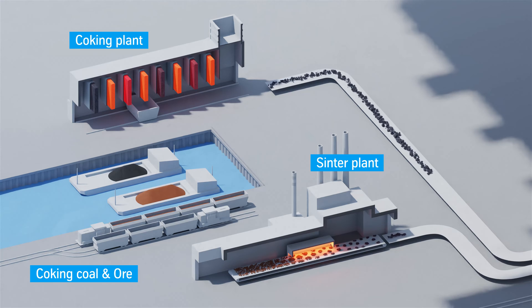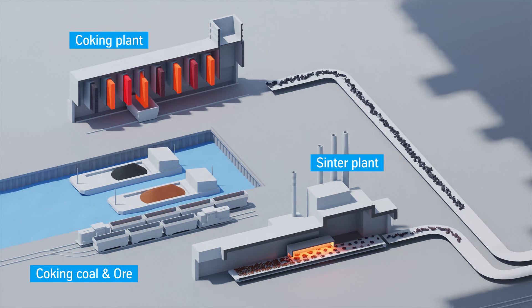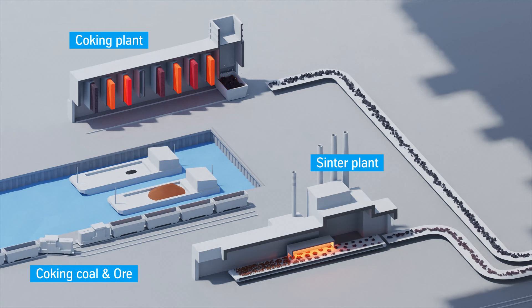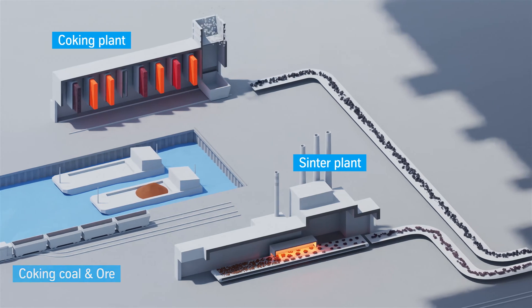In the sinter plant, iron ore fines are prepared for further processing in the blast furnace. The iron ore is baked together in scorching hot air to form coarser lumps—namely, it is sintered.